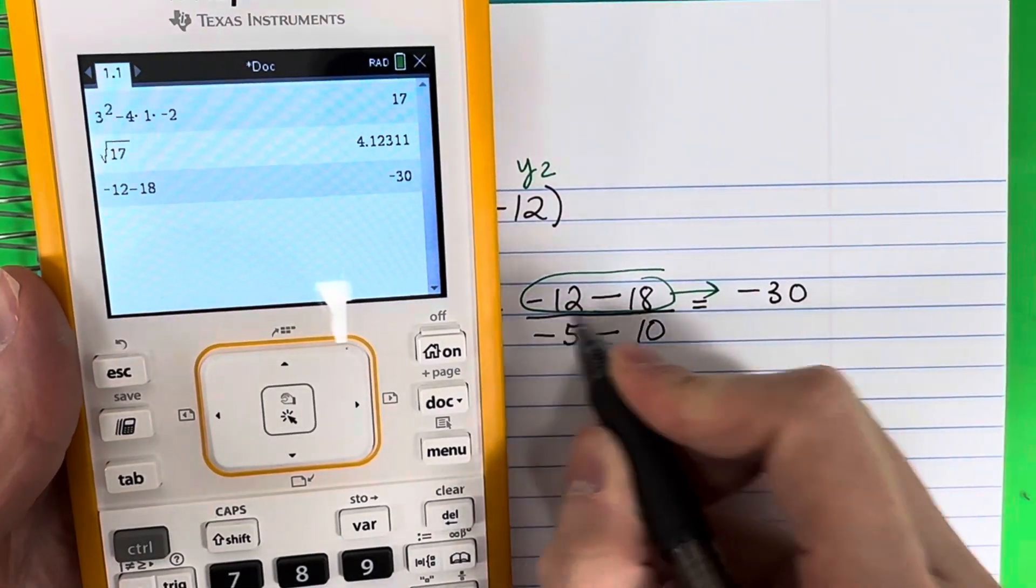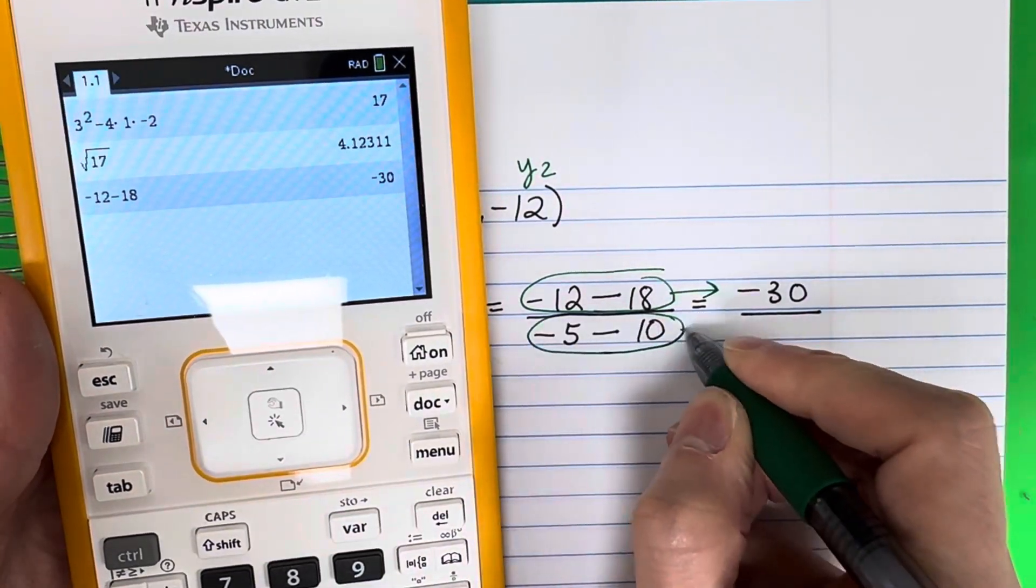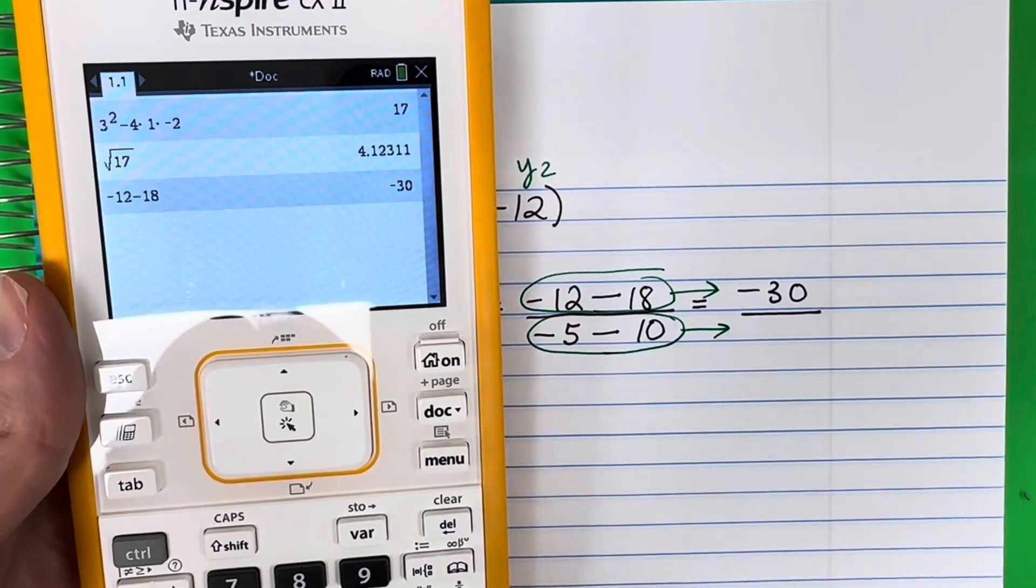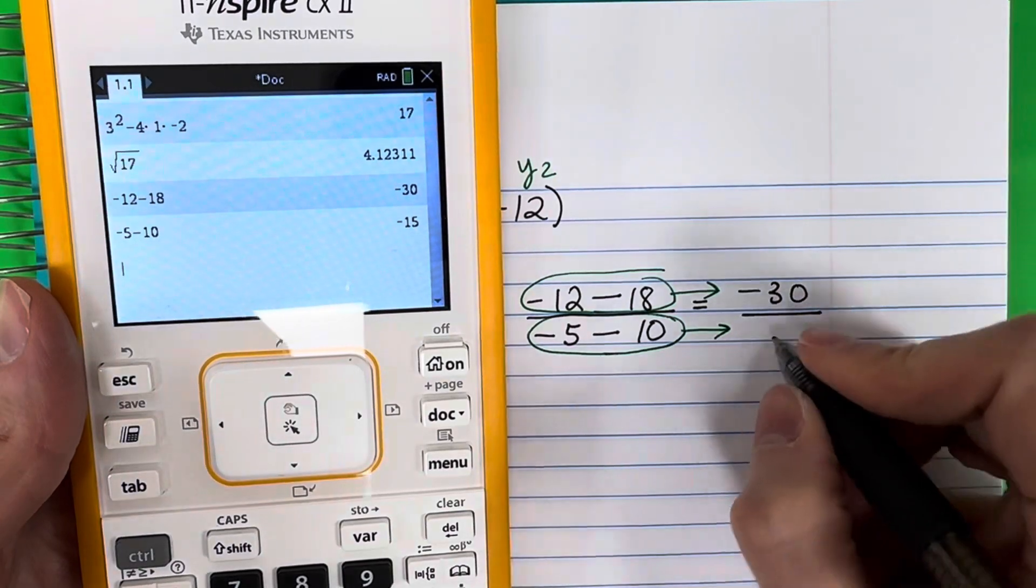Put your divided by. Now we're going to put what is on the bottom in the calculator. Negative 5 minus 10. Push enter. It's negative 15.